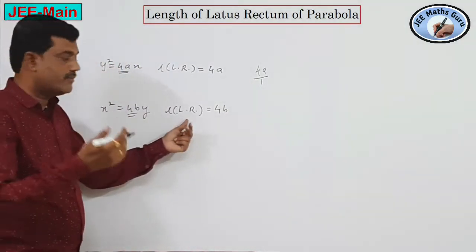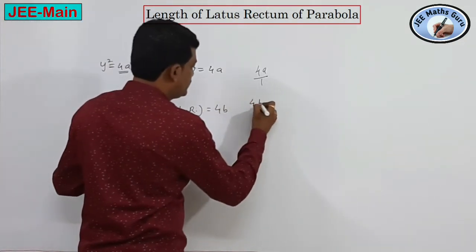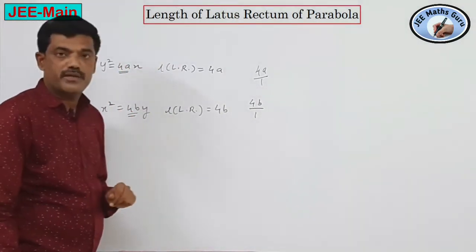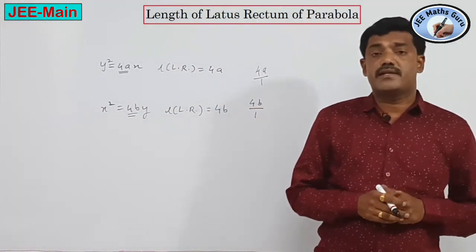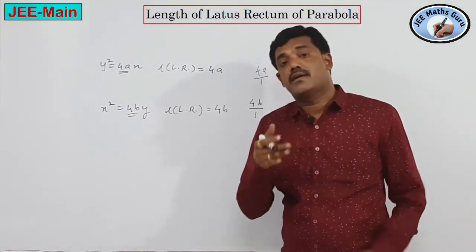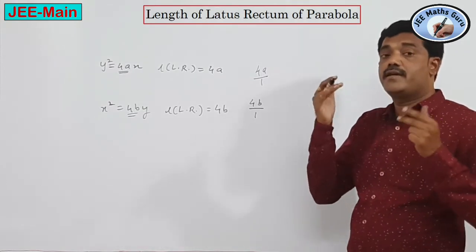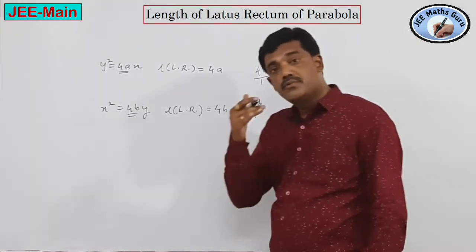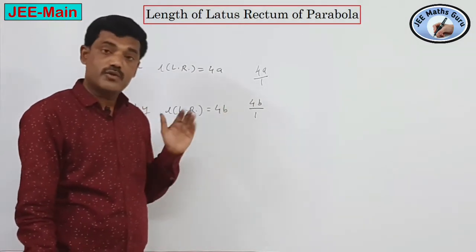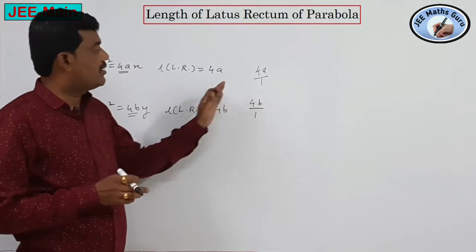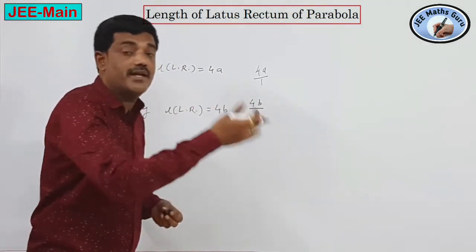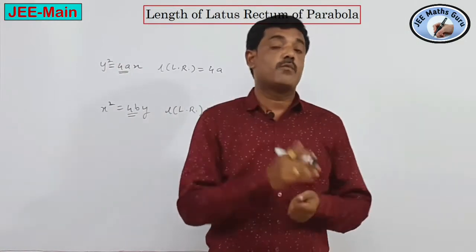For the parabola x² = 4by, the length of the latus rectum is 4b. Here, coefficient of y is 4b upon coefficient of x² which is 1, giving 4b. The axis of y² = 4ax is the x-axis, and the axis of x² = 4by is the y-axis. This trick applies to all parabolas whose axis is parallel to either the x-axis or y-axis.